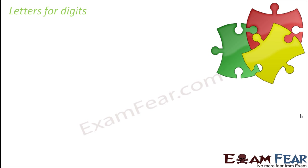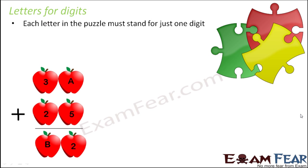So what do we mean by letters for digits? Look at this puzzle. Here, instead of numbers at certain places you have letters — for example A, B. These are the letters, and it is a kind of puzzle where you need to replace these letters with the appropriate digits. It looks difficult when you first see this, but we will learn the tricks to solve these kinds of puzzles.